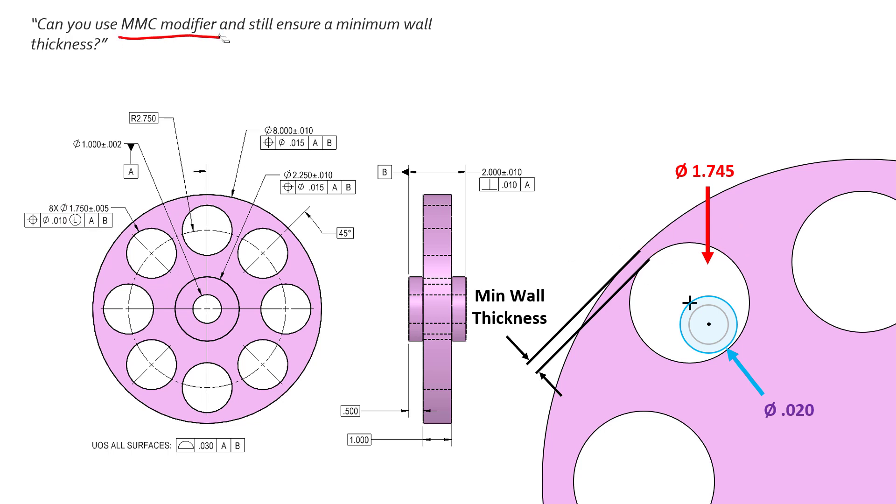We can calculate what that minimum would be. But the question is: can you use maximum material condition modifier and still ensure a minimum wall thickness? Well, let's change out this LMC over here and swap it in for an MMC modifier.